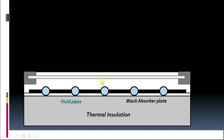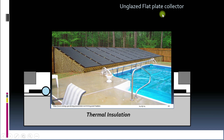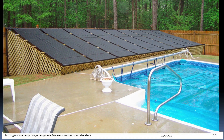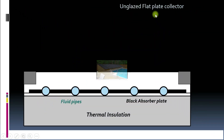Let's see the working of a flat plate collector. It will be easy to understand if we remove the transparent screen. The collector without the screen is called an unglazed flat plate solar collector. This type of collector is generally used for swimming pools where the hot water temperature requirement is not high.